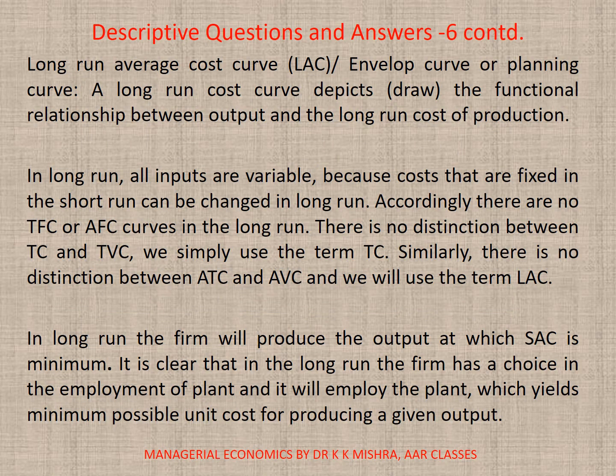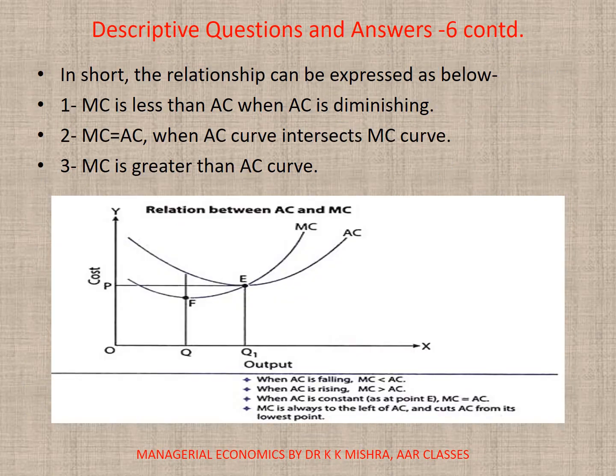In the long run, all inputs are variable because costs that are fixed in the short run can be changed in the long run. Accordingly, there are no total fixed or average fixed cost curves in the long run. There is no distinction between total cost and total variable cost — we simply use the term total cost. Similarly, we use the term LAC in the long run. The firm will produce the output at which SAC is minimum, and the firm has a choice in the employment of plant.